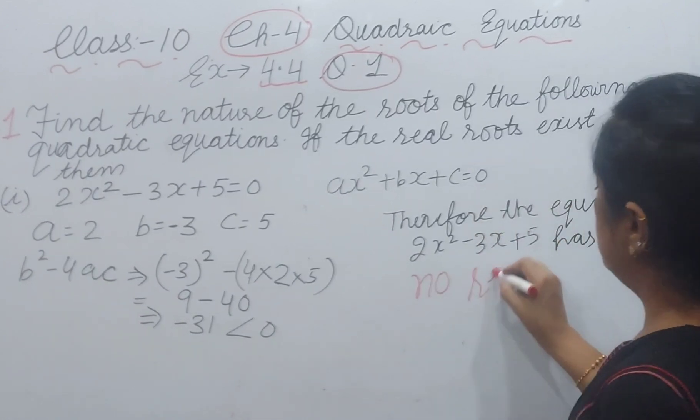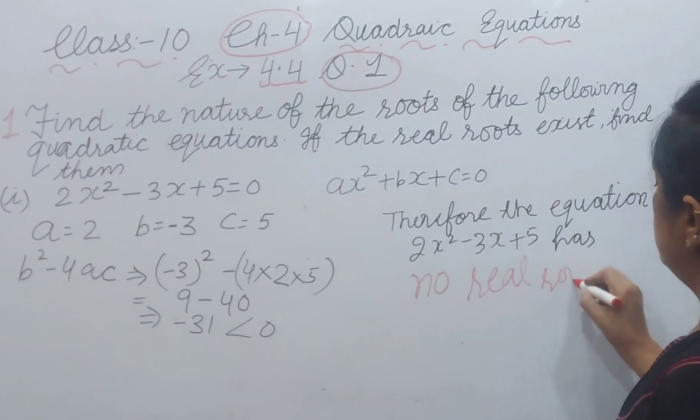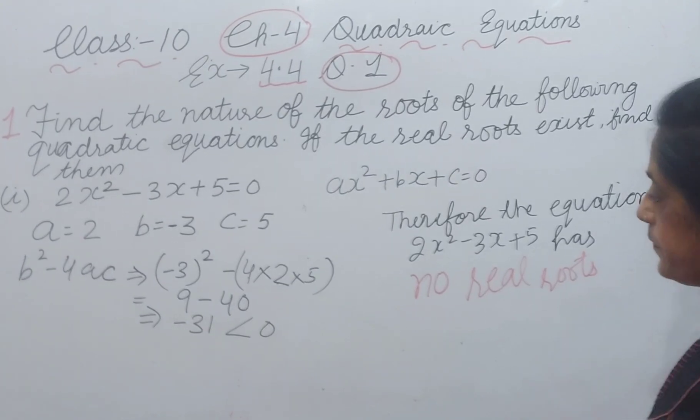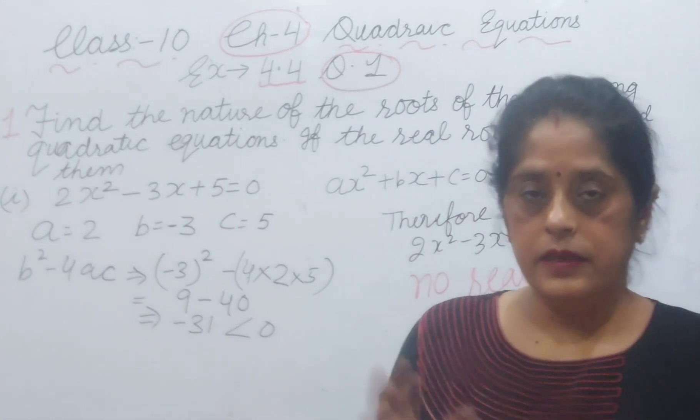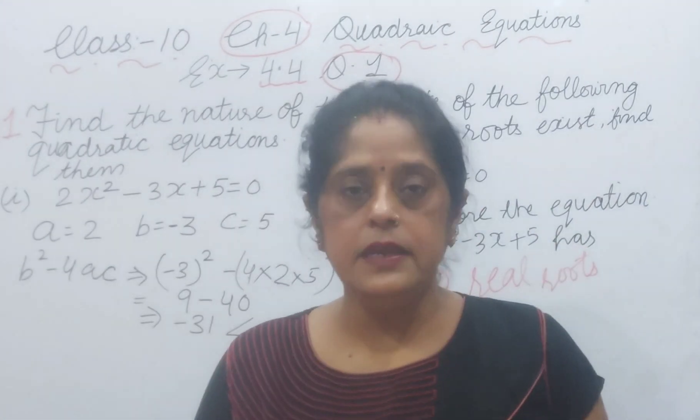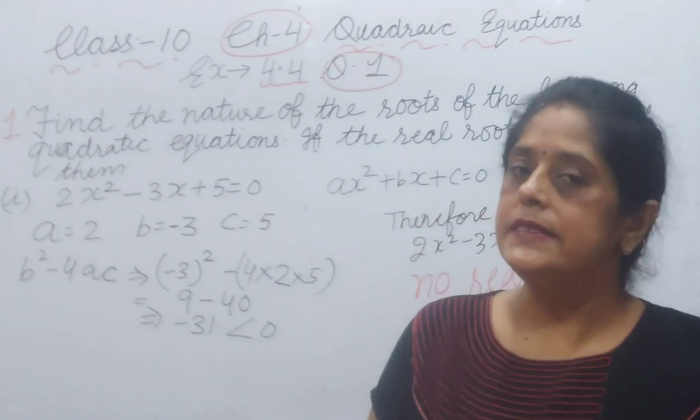Therefore, the equation 2x² - 3x + 5 = 0 has no real roots. This I have explained when I gave the introduction of this chapter. Now I will explain the second part.